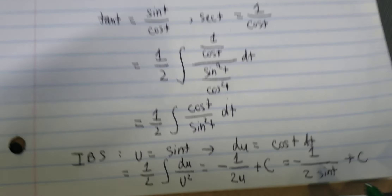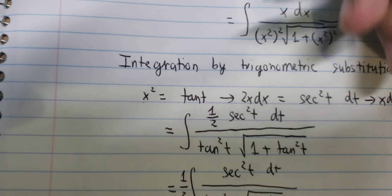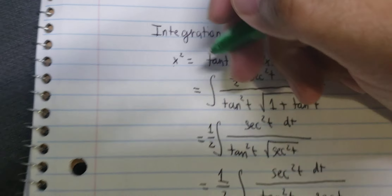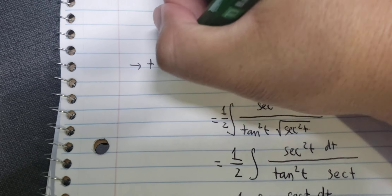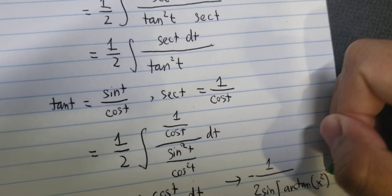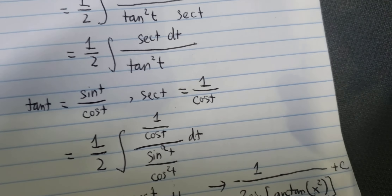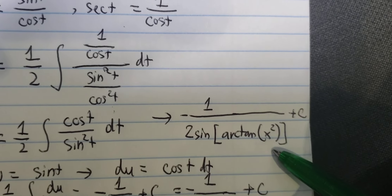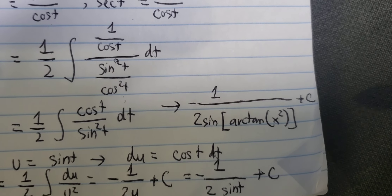About u that is about sin(t). About t, we need to return back to this one. So we put arctan for both sides. And now we need to change t into this one, and we got the final answer in here. This is the end — thank you for watching.